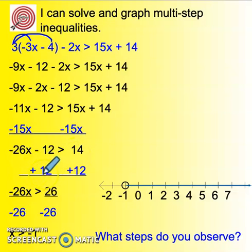And then the last step looks like we're just trying to isolate that variable. So inverse is addition. We add 12 and then we divide by negative 26.